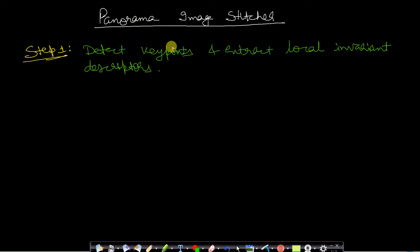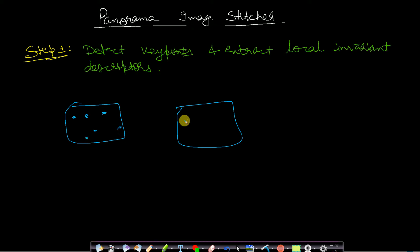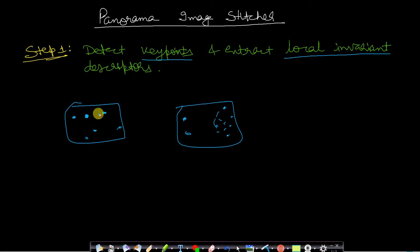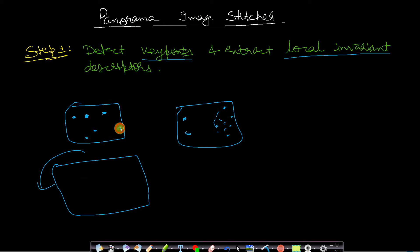There are three steps involved in order to make a panorama image stitcher. The first step is to detect the key points and extract the local invariant descriptors. Key points are the local areas of interest — that means if you scale up, zoom, or rotate your image, they are invariant, meaning they will not change and you will still be able to find these key points.